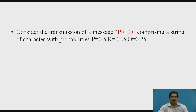Now we want to see one example. Consider the transmission of a message PRPO, comprising a string of characters with probabilities: P is equal to 0.5, R is equal to 0.25, and O is equal to 0.25. In this example, the transmission characters as well as the probabilities of each character are present. But in some cases, only the transmission characters are provided, and from those characters you have to calculate the probabilities.